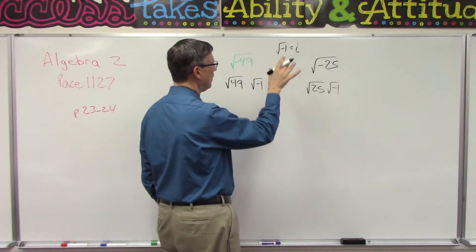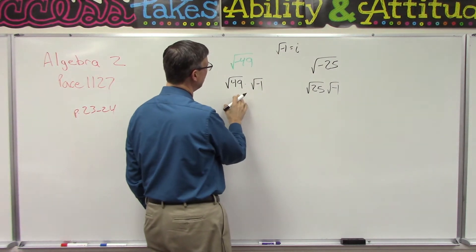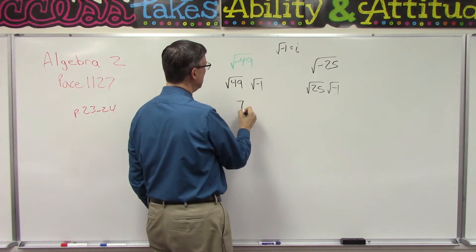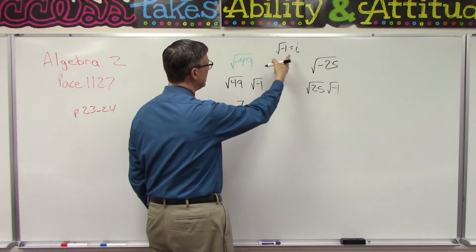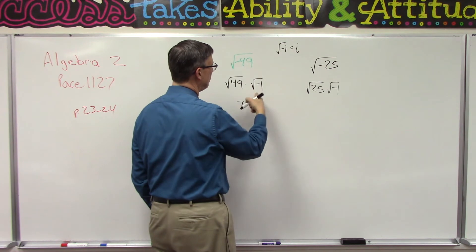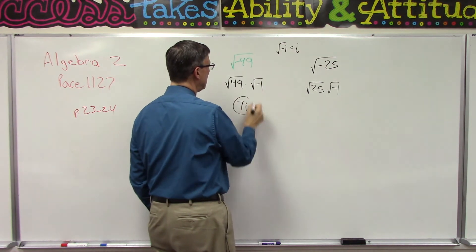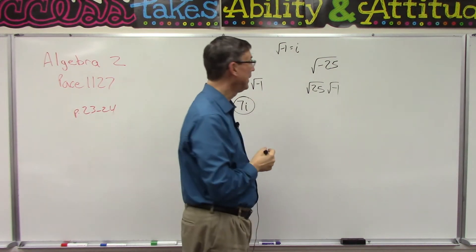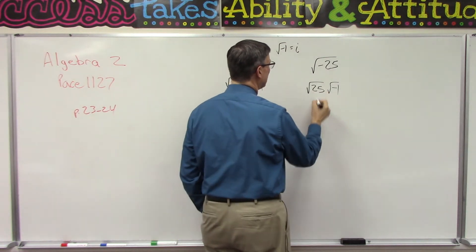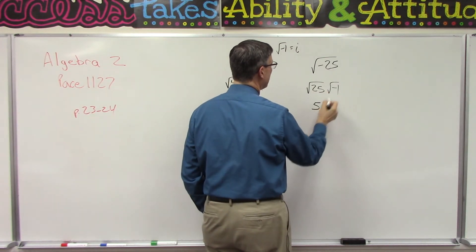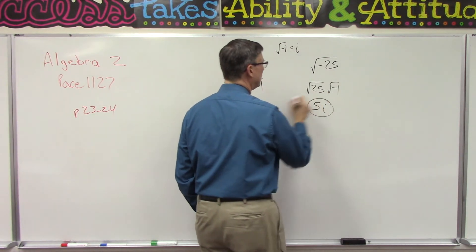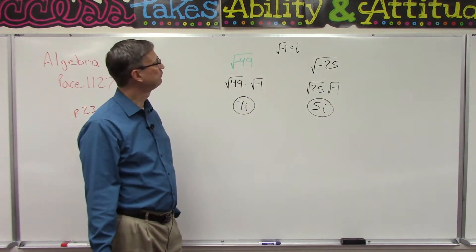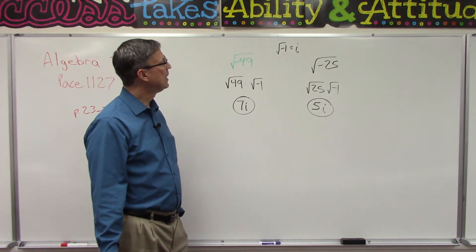Let's not go off on a rabbit trail here — let's take this and simplify it. What's the square root of 49? 7. And now we can bring down the square root of negative 1 as i, so we write it as 7i. The square root of 25 is 5 — bring that down, we have 5i. You see, it really isn't that hard.